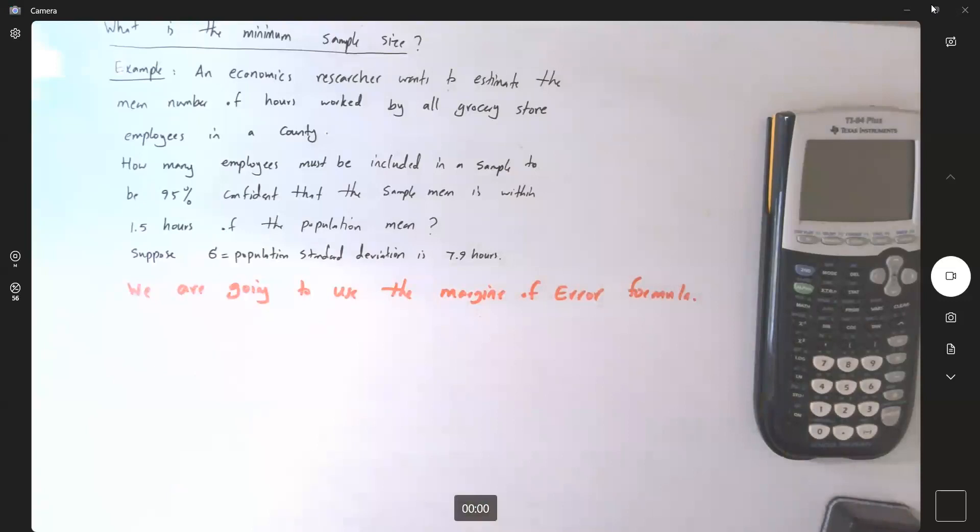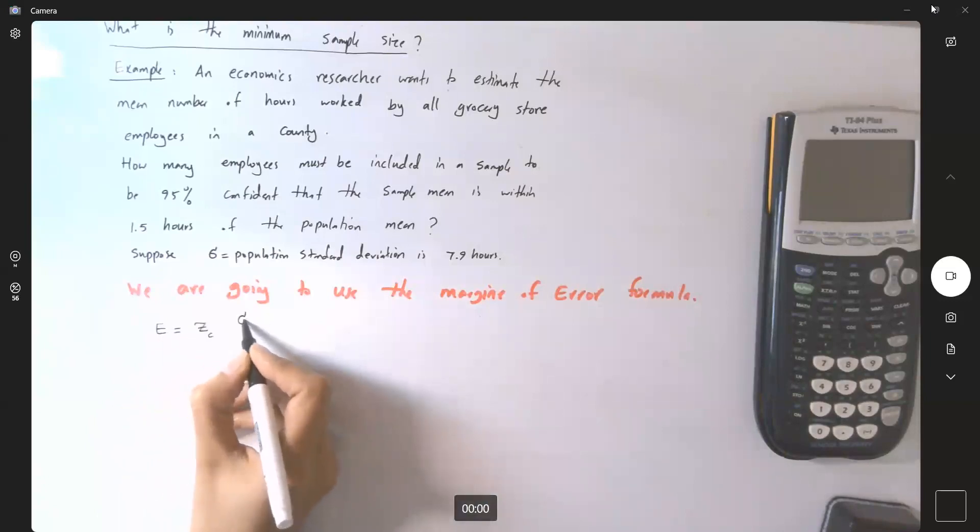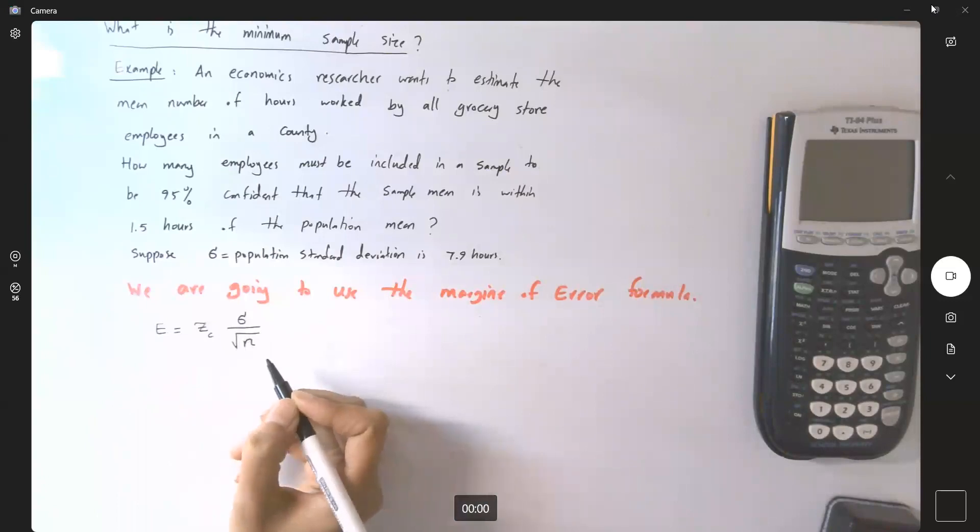Remember the margin of error formula to find and construct the confidence interval for population mean was zc sigma divided by square root of n. But this n is missing. So let's take a look at this.